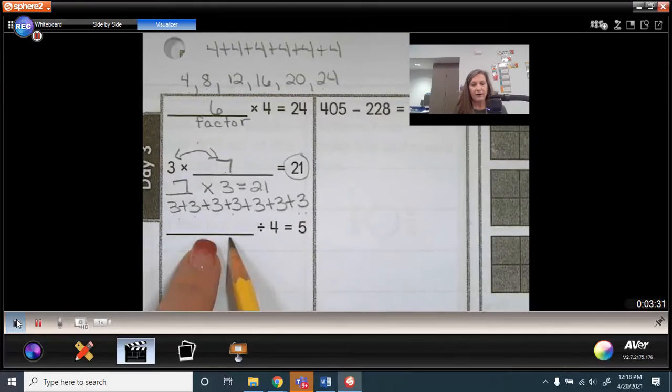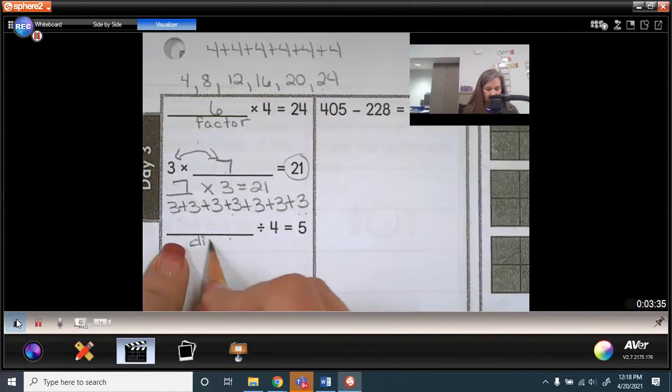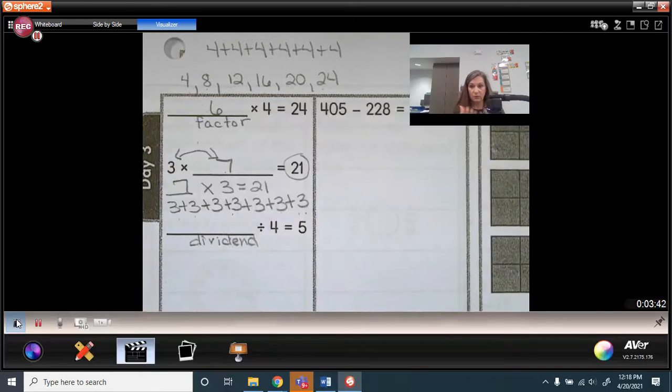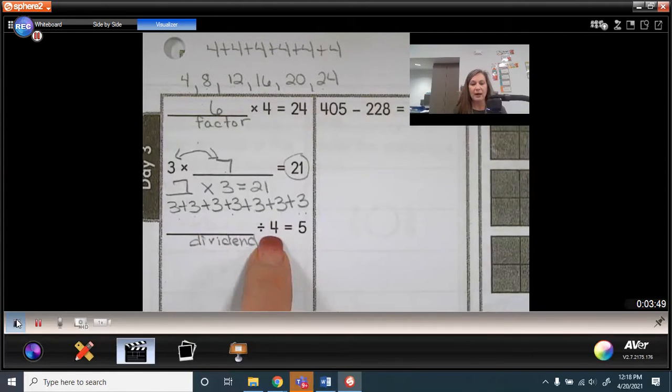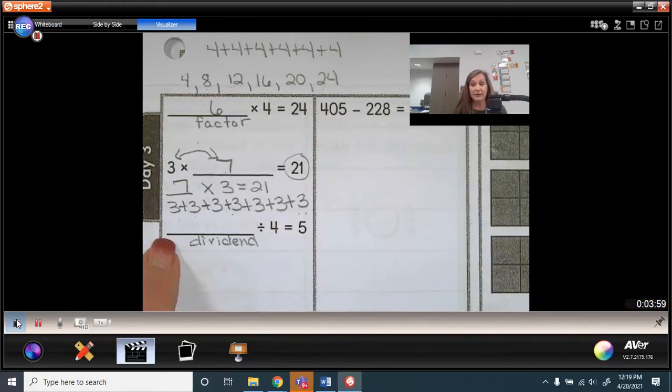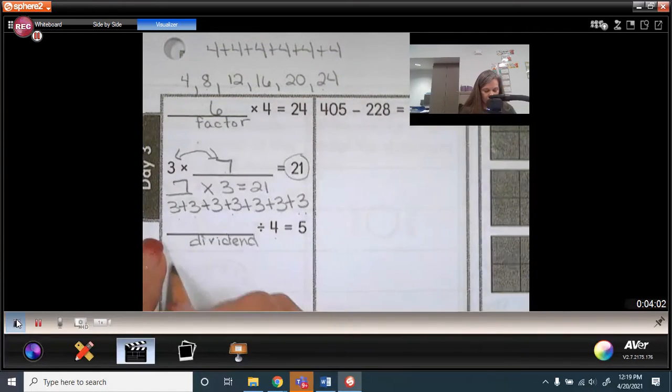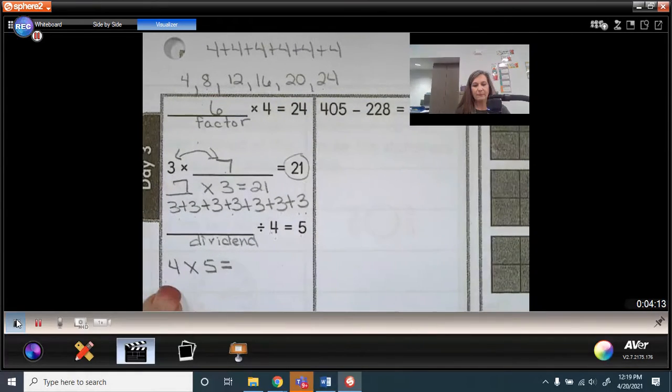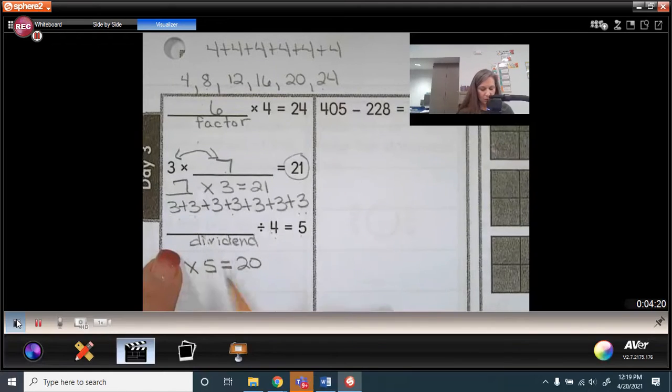Now, here I'm missing my dividend. Remember, your dividend is your total. So we need to use multiplication to help us find this missing dividend. The 4 can be your groups and the 5 will be the number in each group. So what is 4 groups of 5? Right, it's going to be 20. So my missing dividend is going to be 20.